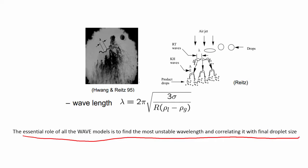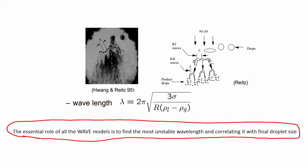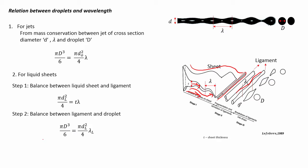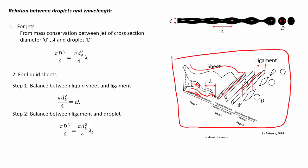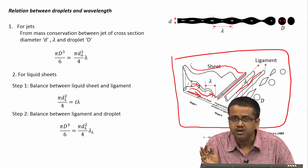The essential role of the wave model is to find the most unstable wavelength and correlate it with droplet size. In most applications, droplets do not come out directly; first a liquid sheet forms outside or inside the nozzle depending on the nozzle design. There is a common misconception that one can directly know the droplet sizes coming out of the nozzle — that is incorrect. To predict droplet sizes at a certain distance from the nozzle, one needs to understand the atomization mechanism.